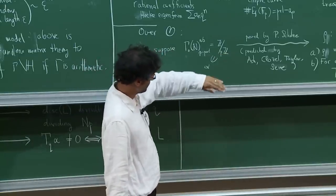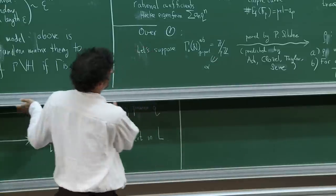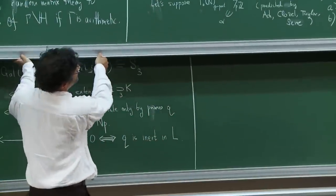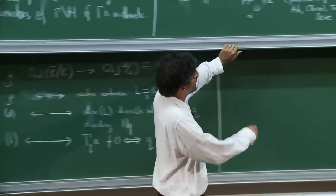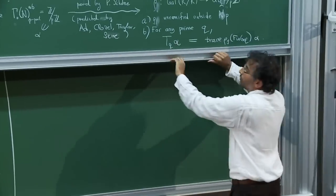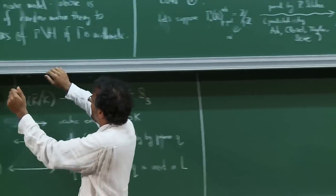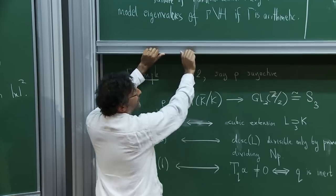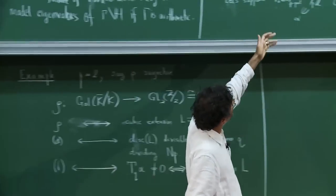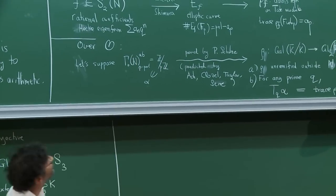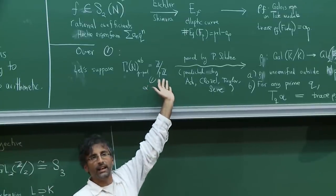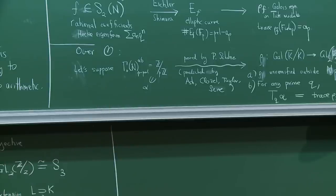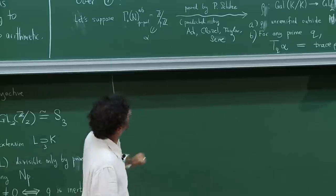One of the main motivations for studying this — with the conjecture I made with Nicolas Bergeron — was to show that this kind of torsion phenomenon is not some strange exception, but that once you go away from groups like SL2 and Shimura varieties, it's actually the norm. What you see is primarily torsion, and very little in characteristic zero.